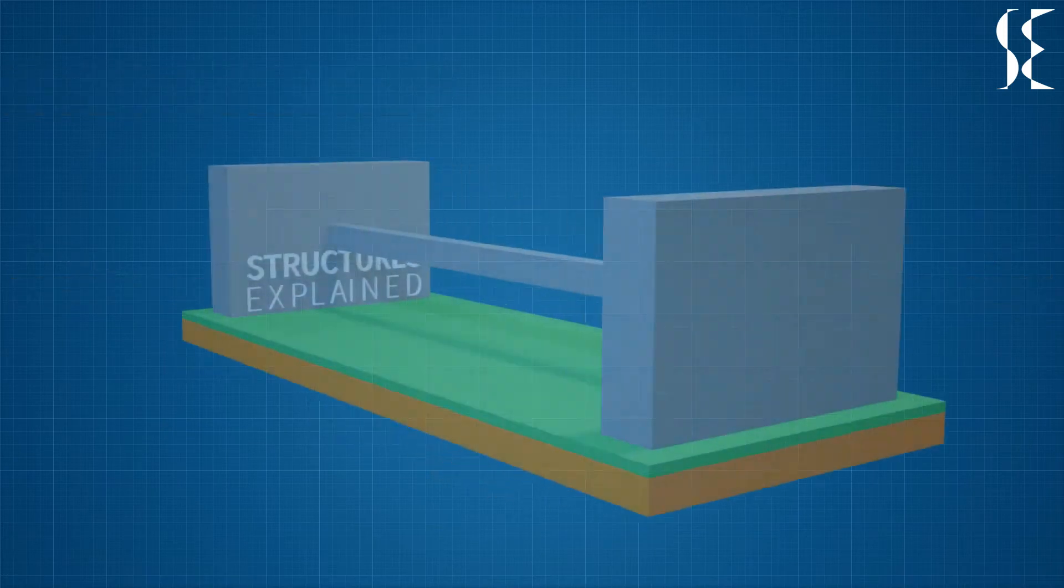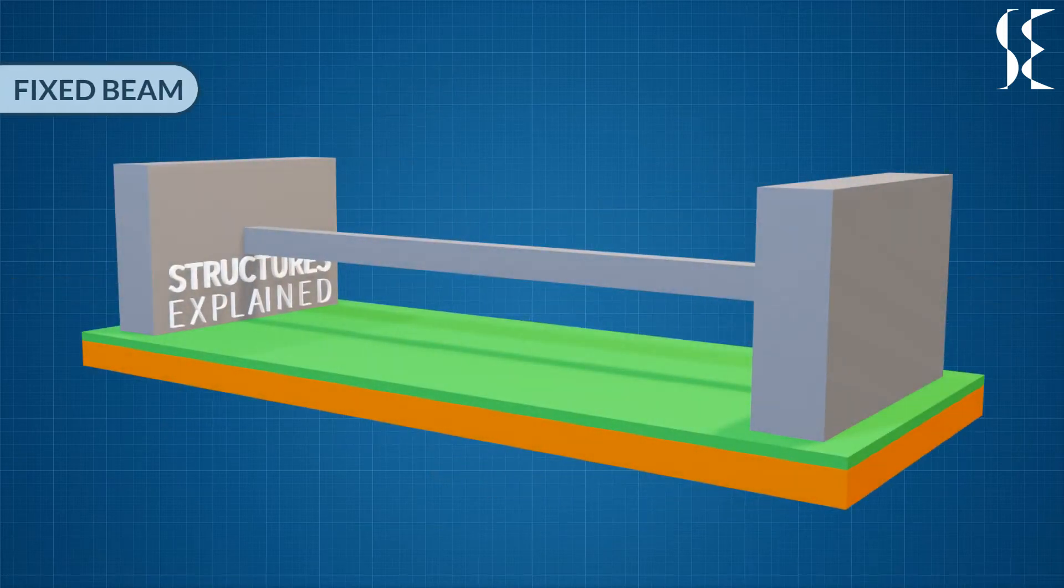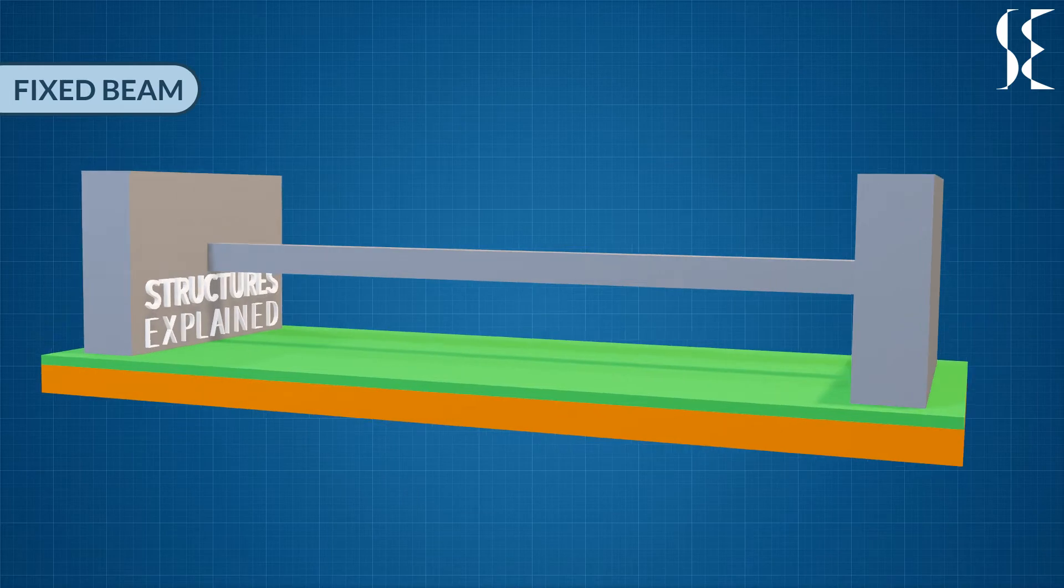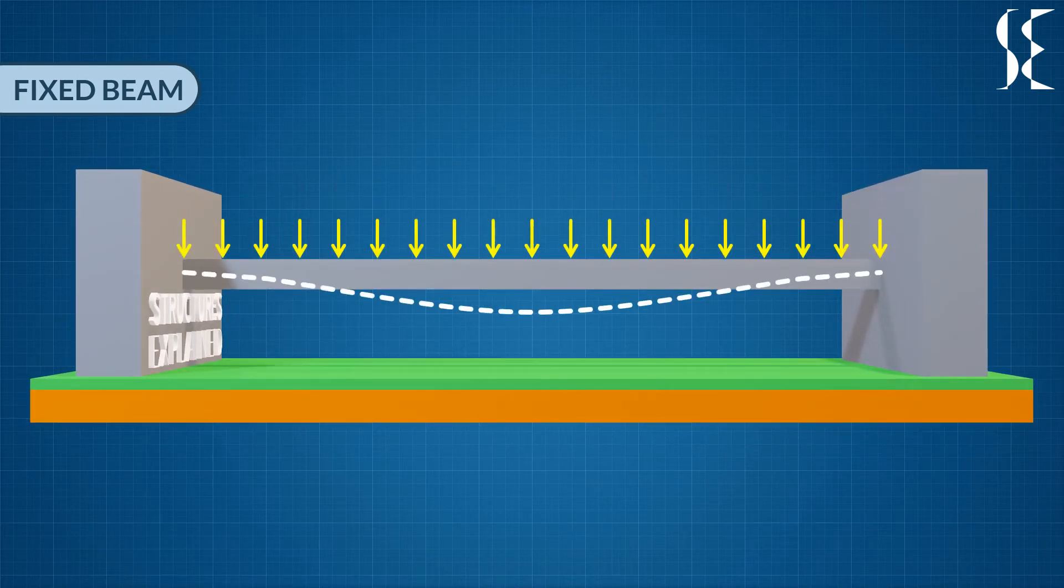Next is fixed beam which has fixed or rigid support from both the ends. Deflected shape due to uniform loading would look something like this in which fixed supports will not rotate.